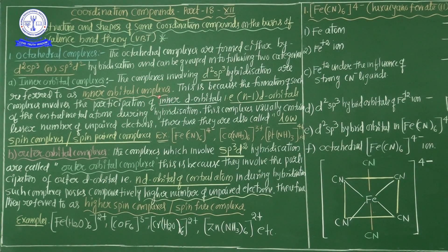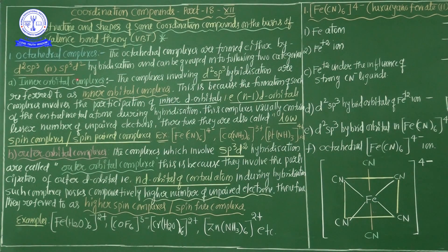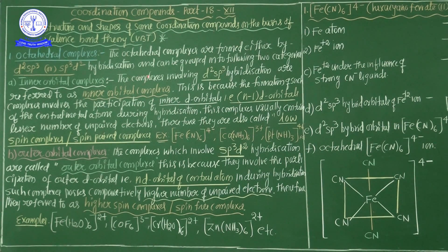From a CBSE point of view, octahedral complex formation is most important, so we are now going to discuss how octahedral complexes form based on VBT theory. In octahedral shape, 6 ligands are present with coordination number 6.